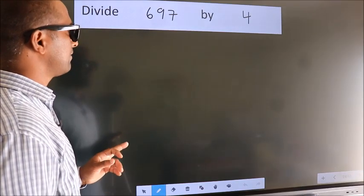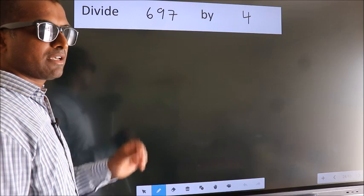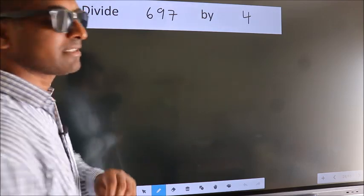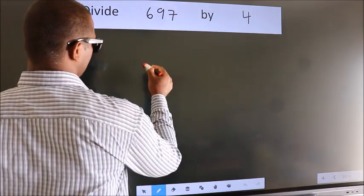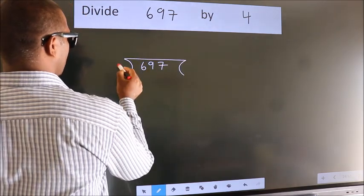Divide 697 by 4. To do this division, we should frame it in this way. 697 here, 4 here.